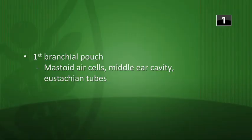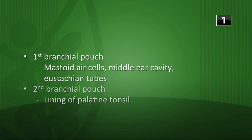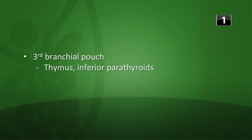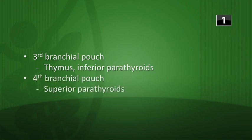First question: what structures are derived from the brachial pouches? The first brachial pouch is where we get the mastoid air cells, the middle ear cavity, and the eustachian tubes. The second brachial pouch is the lining of the tonsils. The third pouch is the thymus and also the inferior parathyroid glands, and then the fourth pouch is the superior parathyroid glands.